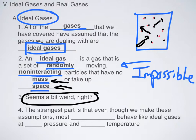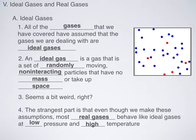But the weirdest part about this is that real gases, like hydrogen or nitrogen or carbon monoxide or carbon dioxide, they actually can behave like ideal gases under the correct conditions. So what are these conditions? Under low pressure and high temperature, even real gases can behave like ideal gases.